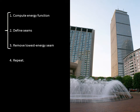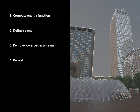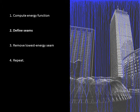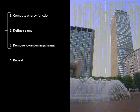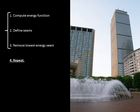Seam carving consists of three general steps. The first is the computation of an energy function for the seam to describe critical image areas. Next, we define image seams based on the previously computed energy function. Finally, with the seams located, we remove the seam with the lowest energy from the image. These steps are repeated until the image has been reduced to its target size.